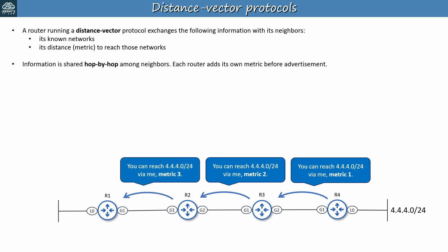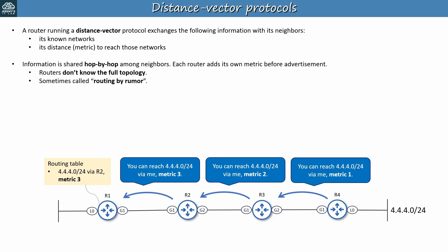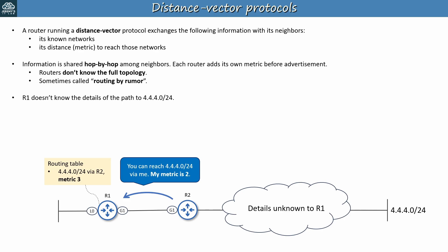Then R2 advertises the network to R1, this time with a metric of 3. Finally, R1 adds the route to its routing table. The key point is that routers don't know the full topology — they only know what their neighbors tell them: the destination network and their metric to reach it, not which specific routers or links are in the middle. For this reason, you'll hear the distance vector approach called routing by rumor. The details of the path beyond R2 are unknown to R1 — it just knows that it can send packets to the network via R2 with a metric of 3.